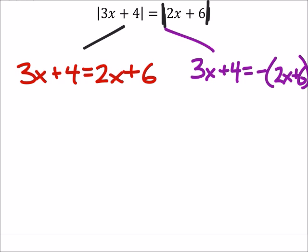So, solving the red one first. We would subtract 2x from both sides. You could subtract 3x. It's not going to matter which side you choose the x's to be on.